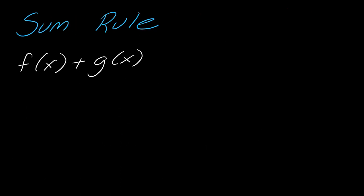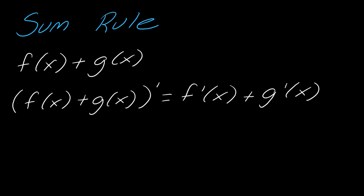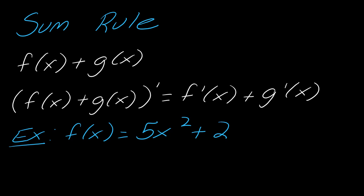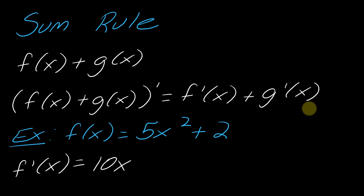Moving on to the sum rule. If you're adding two functions f(x) and g(x) and want to take the derivative, you get f′(x) + g′(x). This is a pretty simple and intuitive rule — you'd probably do it without thinking. For example, the derivative of 5x² is 10x, and the derivative of any constant is 0, so the whole derivative is just 10x.